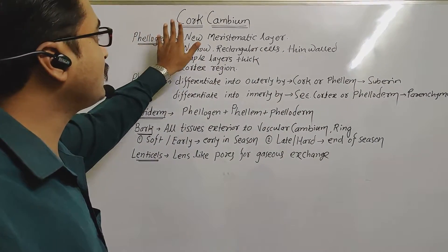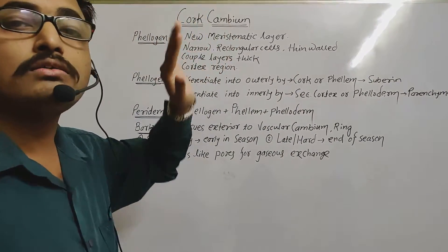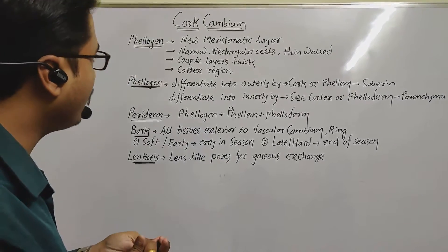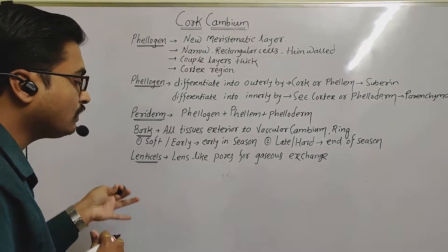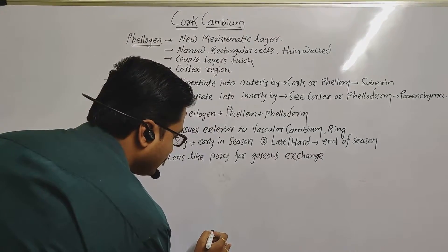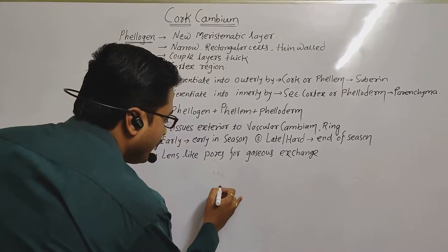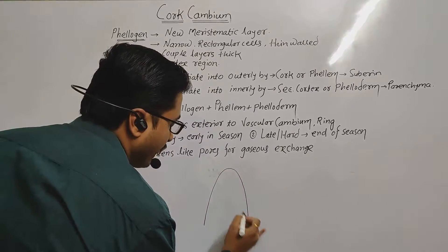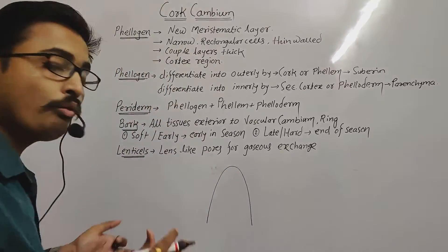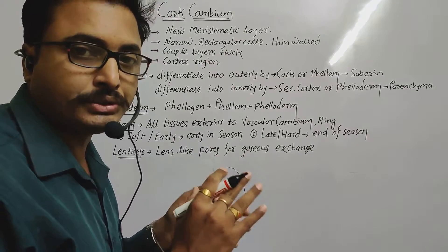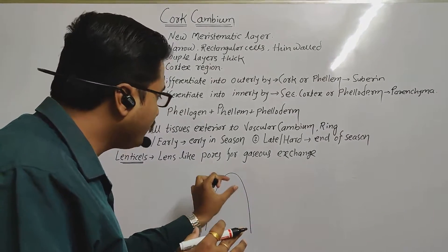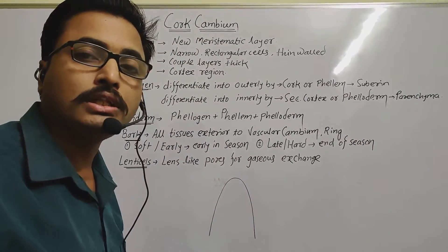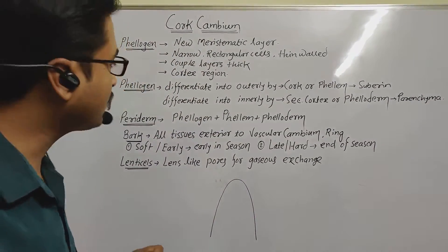Phelogen is another term for cork cambium. Phelogen kub banta hai aur kyun banta hai? Consider a dicot plant stem. In woody dicot plants and trees, cork cambium formation takes place easily.